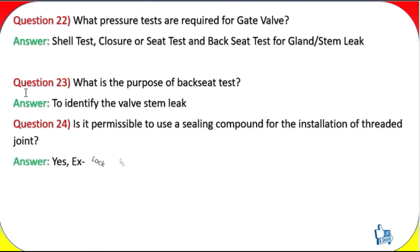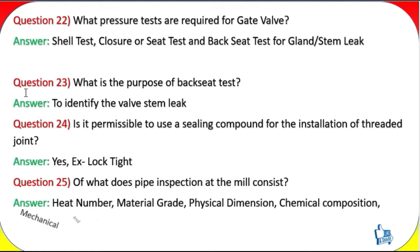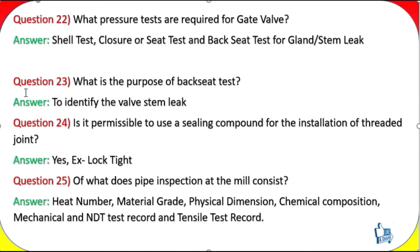Question 24: Is it permissible to use a sealing compound for the installation of a threaded joint? Answer: Yes — e.g., Loctite. Question 25: Of what does pipe inspection at the mill consist? Answer: Heat number, material grade, physical dimensions, chemical composition, mechanical and NDT test records, and tensile test records.